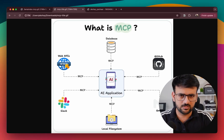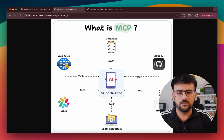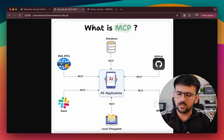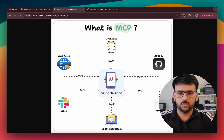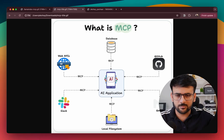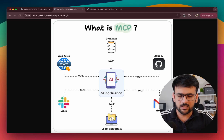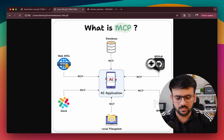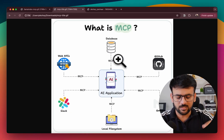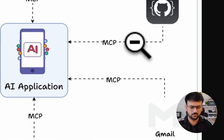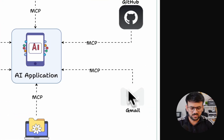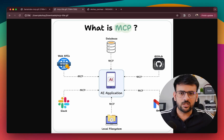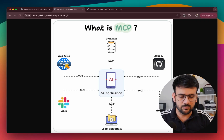Let's set the context by understanding what MCP is and why we need to learn how to build a local client. MCP is a standardized way to connect your LLMs or AI agents to external APIs, data sources, and any tool that is out there. You can think of it as a USB-C port for your AI application, where you can easily plug and play a database, an MCP server built over GitHub, Gmail, or local file system, and any API on the internet using a standard interface.